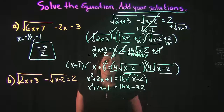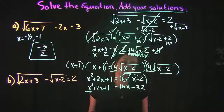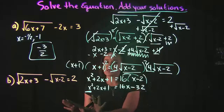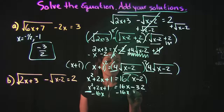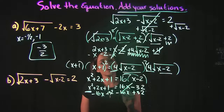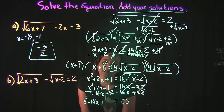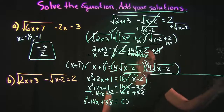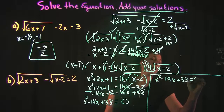I see an x² term, which tells me this is a quadratic equation. I need to move everything to one side set equal to zero. Subtracting 16x and adding 32 to both sides gives us x² minus 14x plus 33 equals 0.